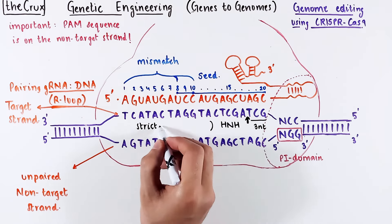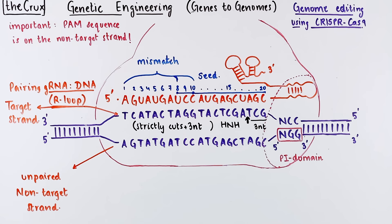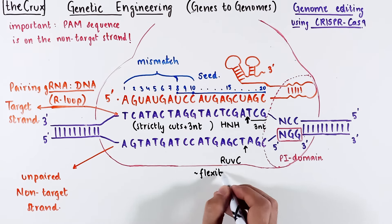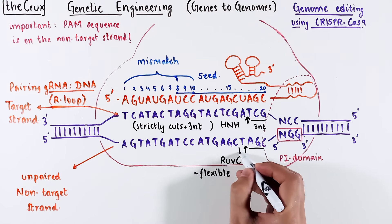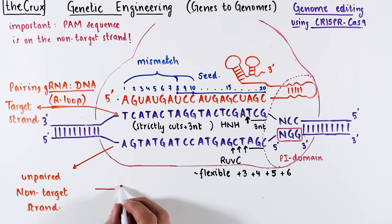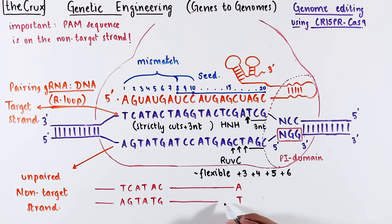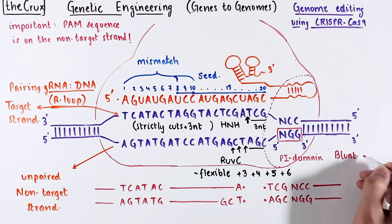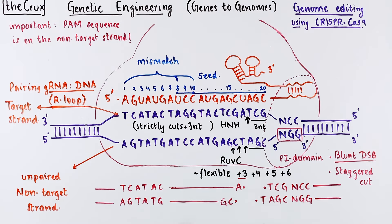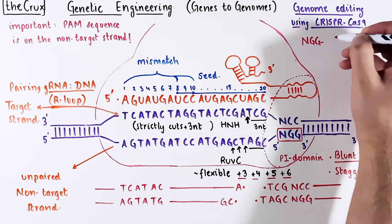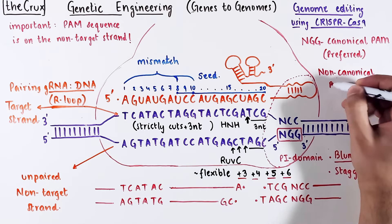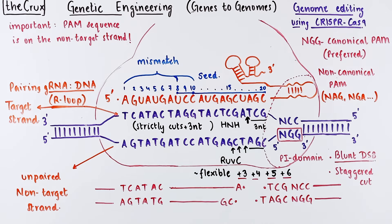The HNH nuclease domain strictly cuts 3 nucleotides upstream of NGG. Keep in mind that the guide RNA is never cleaved — only the DNA is cleaved. The non-target strand is cut by the RuvC domain of Cas9, also 3 nucleotides upstream of NGG, but RuvC is oftentimes flexible in its cut position — sometimes cutting 4, 5, or even 6 bases upstream. This means the double-stranded DNA is cut on both strands. If both domains cut 3 bases upstream of the PAM, you get a blunt double-stranded break. Alternatively, you can get a staggered cut if RuvC cuts further upstream. As a side note, NGG is what Cas9 prefers as a PAM; sometimes it can also use sequences like NAG or NGA with low efficiency, but NGG is always preferred.